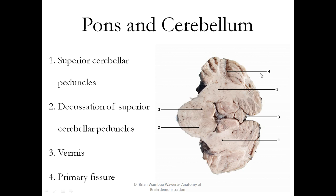When you go to the pons and the cerebellum, this is an axial section — cut on the transverse plane. This is the pons, and this is the cerebellum behind. You can notice that labeled 1 will be the superior cerebellar peduncle, which connects the pons and the cerebellum. Here you can actually see the decussation of the superior cerebellar peduncles at that level.